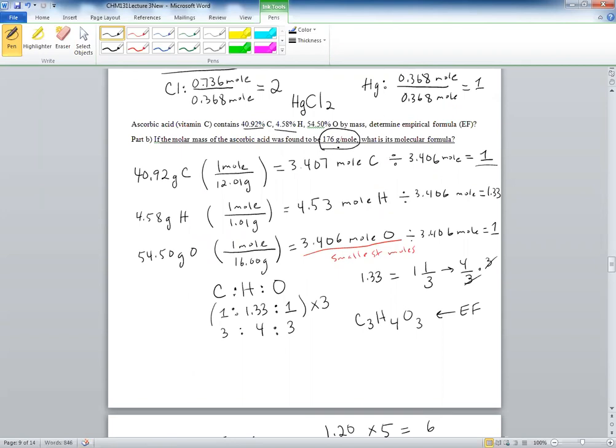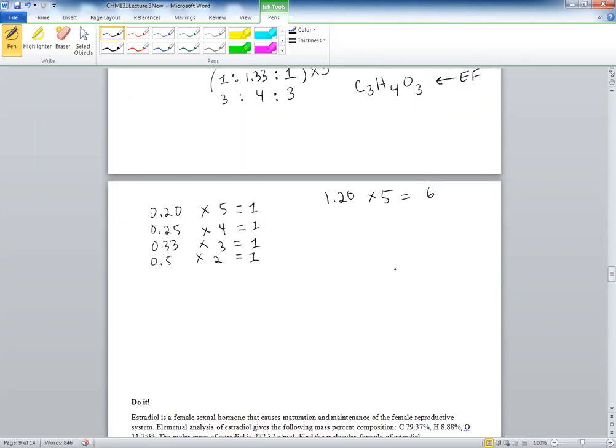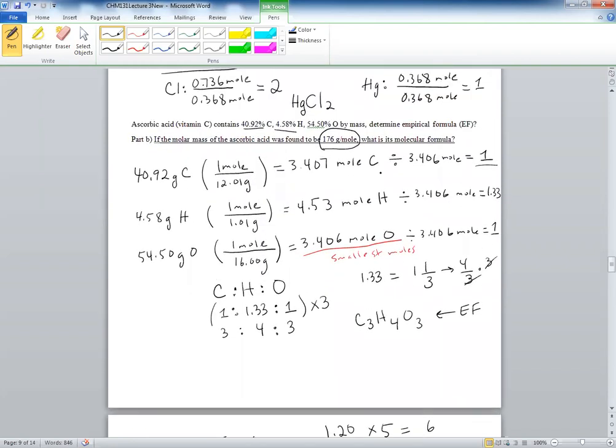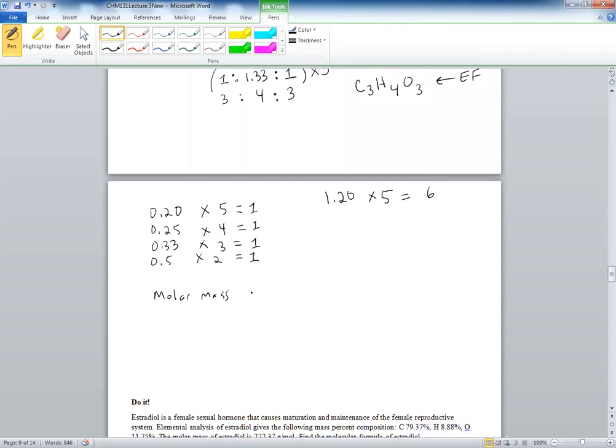Now a word here: in the homework or sometimes in the lecture, we may actually use AMU. So let's bring this number down. The molar mass of the molecular compound was found to be 176 grams per mole. Once again, I'm going to add here that this can be written in AMU, atomic mass units. Either one is fine.